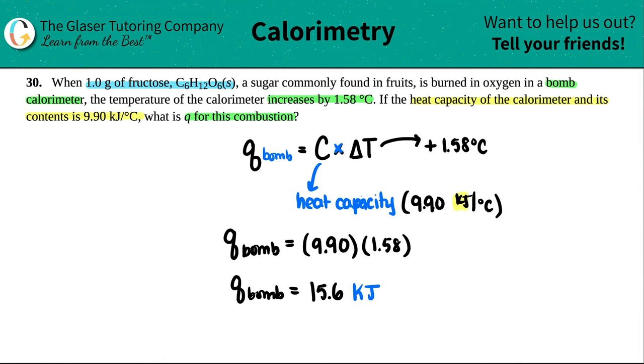Now, they tried to throw you off by adding the one gram of fructose, but that's just saying that with that amount, the bomb calorimeter is going to absorb 15.6 kilojoules of heat. But the 1.0 does not go into this formula. There is no mass in this formula. So it's not needed. It's extra information.